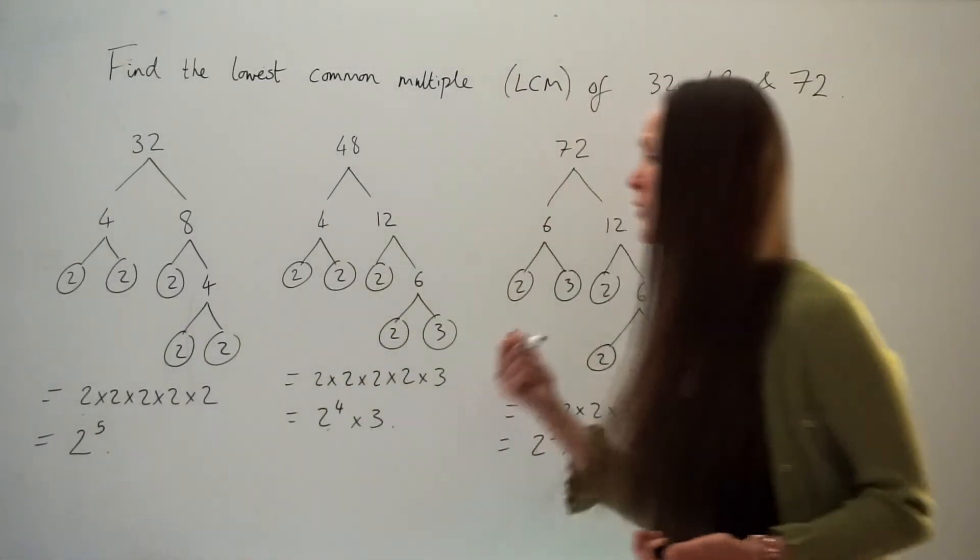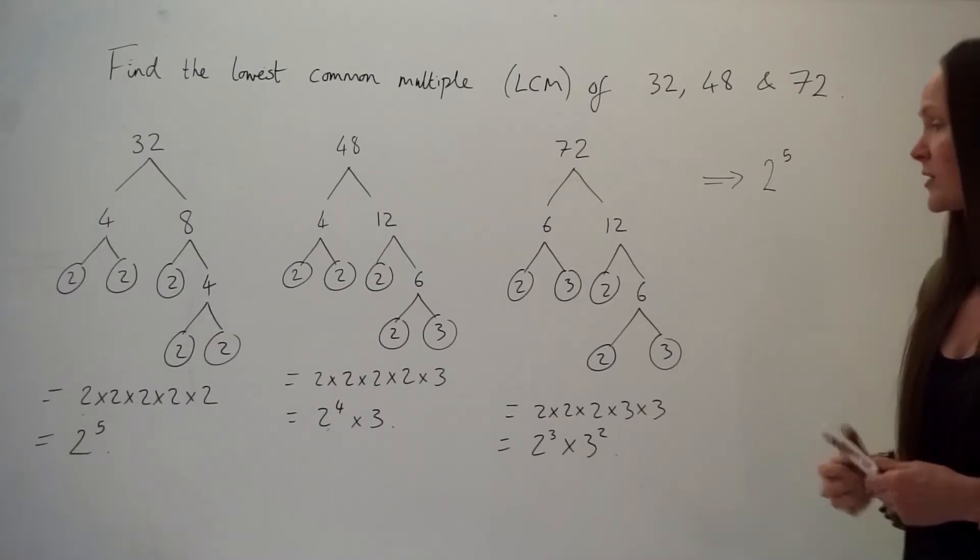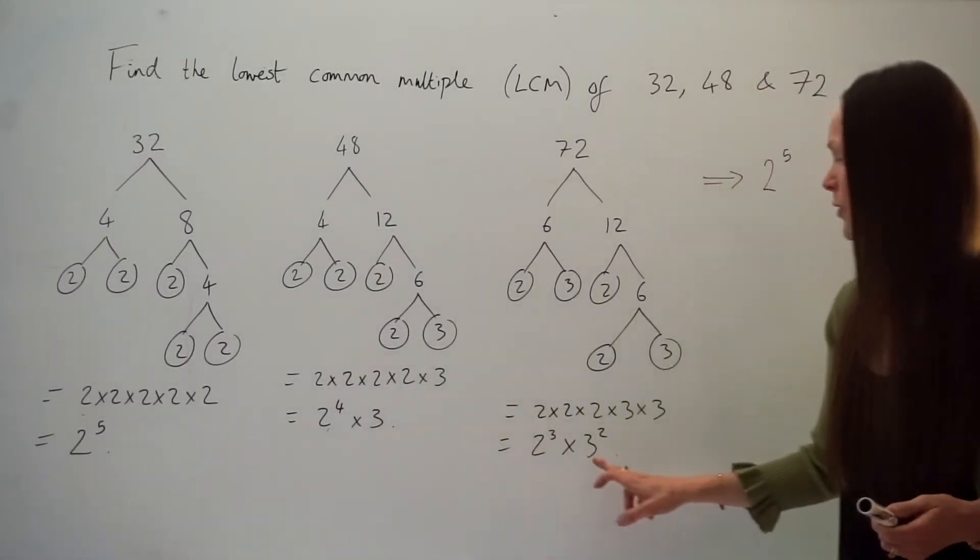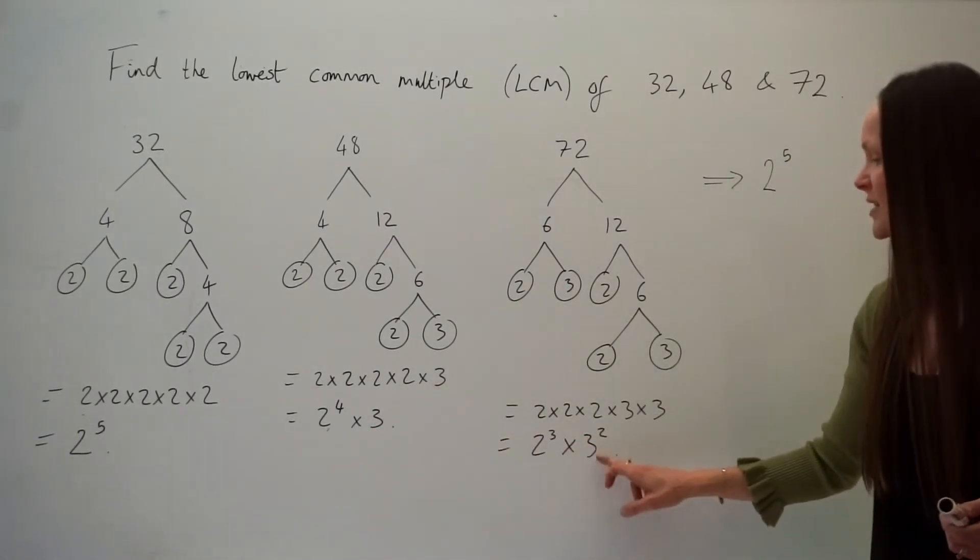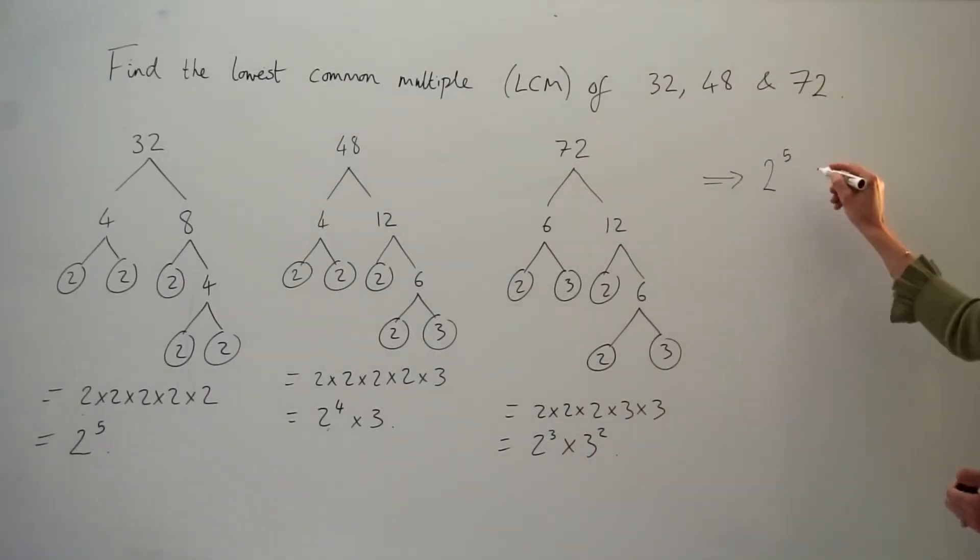Another prime factor to consider is the number 3, and I can see over on the right I've also got 3 squared. So the one with the highest power is this one, 3 squared. So I need to multiply 2 to the power of 5 with 3 squared, and when we calculate this it will give us the LCM.